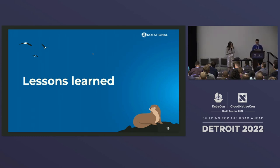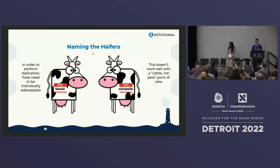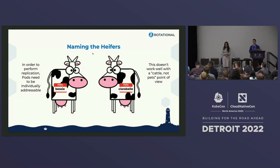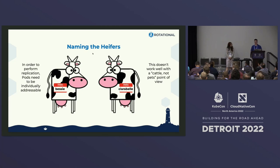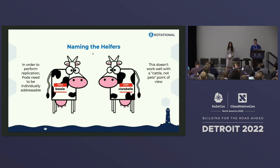In Kubernetes, we're trained to think about pods with a cattle-not-pets mentality — viewing pods as vehicles of execution, not state. They don't stick around; Kubernetes can destroy and create them at will. But this is contrary to what we need, because for replication we need pods to be addressable, and we need that metadata when creating database queries.